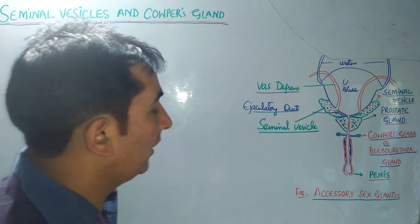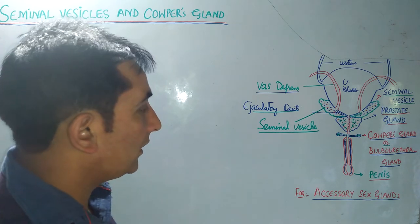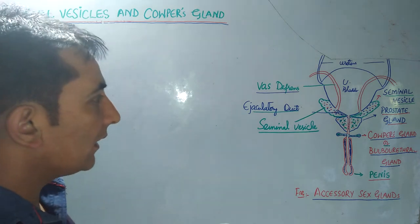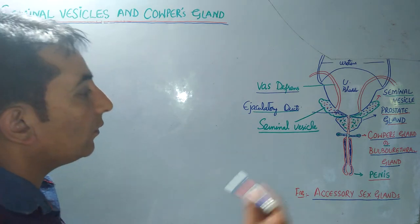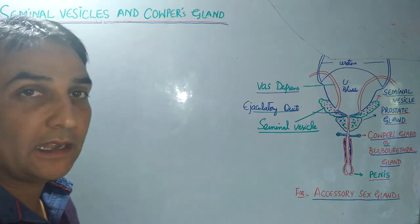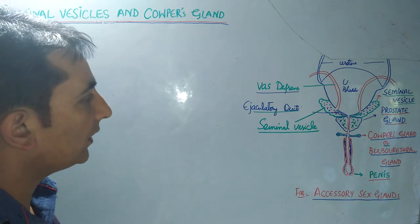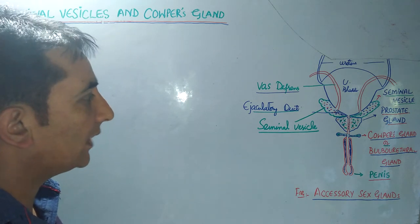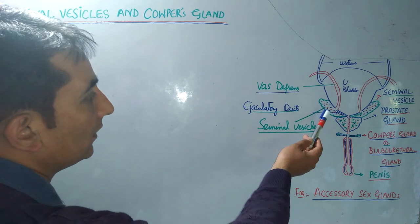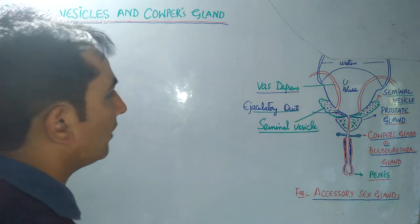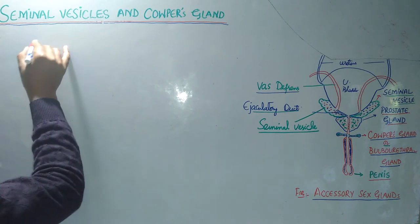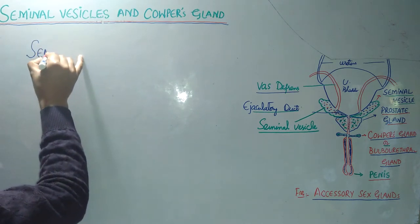In the earlier lecture we discussed the prostate gland. In this lecture we shall focus on the remaining two accessory sex glands, that is the seminal vesicles and Cowper's glands.